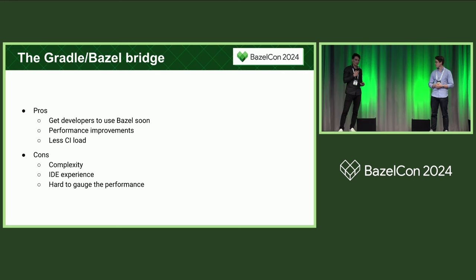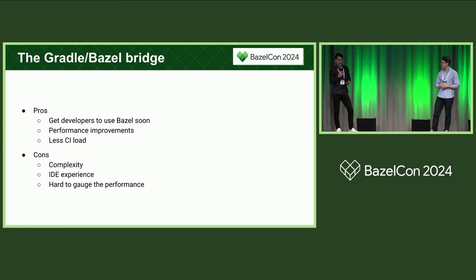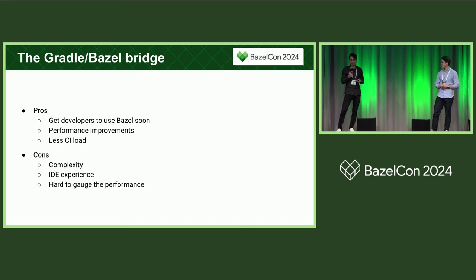But there were also a few disadvantages. It's more complicated to run two build systems — they both consume memory, they resolve dependencies slightly differently, and the interop between the two isn't entirely simple. For some time our IDE experience wasn't great, because developers needed one IDE instance for Gradle code and another for Bazel code. And it was hard to scientifically gauge performance since we never had a complete Bazel build and a complete Gradle build to compare. But as we moved things to Bazel, we saw performance improve and were confident continuing.